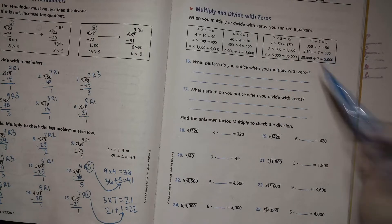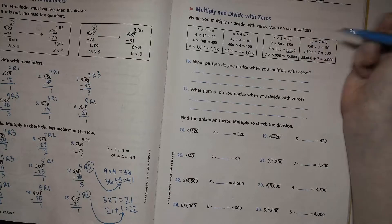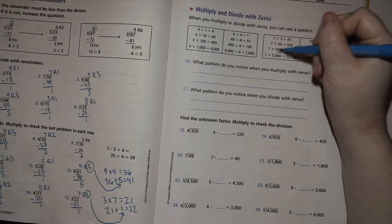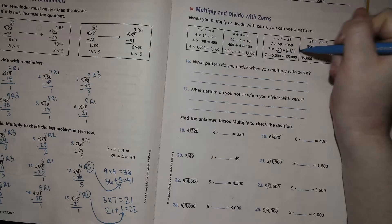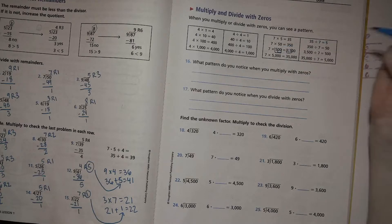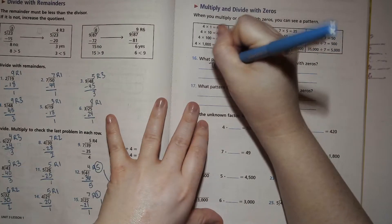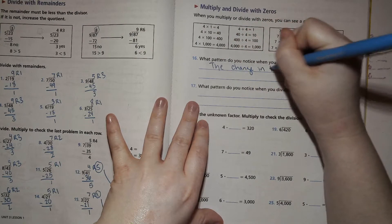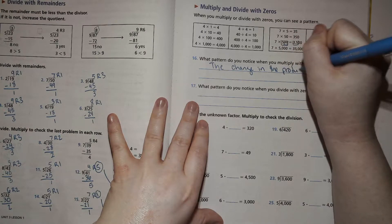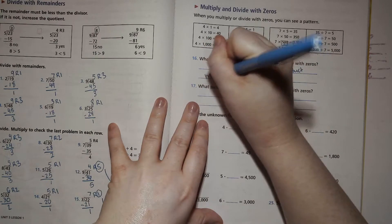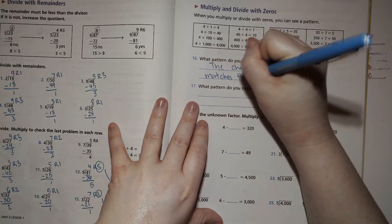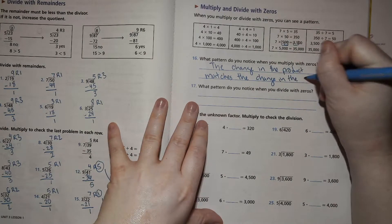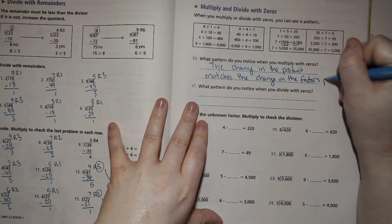So the only thing that changes in the result is really the place value, right? So here, instead of just 35, it's 3,500. We can multiply 500. So the change in the product matches the change in the factors place value.